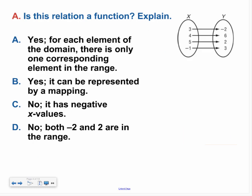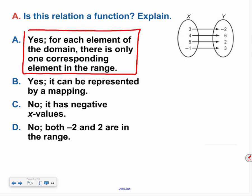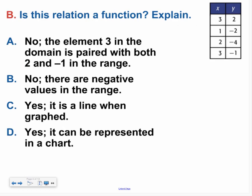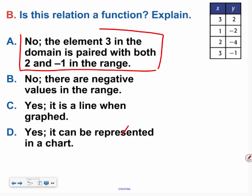Take a minute and try the next ones on your own. Hopefully you said the first one is yes — for each element of the domain there is only one corresponding element in the range. For the next one, the answer is no — the element 3 in the domain is paired with both 2 and negative 1, so that is not a function.